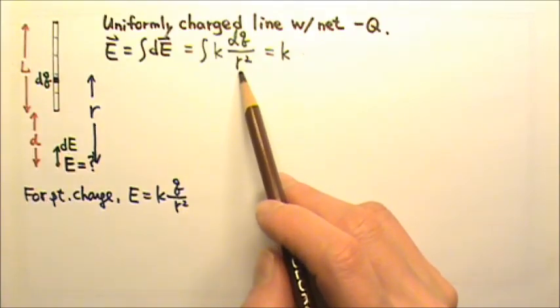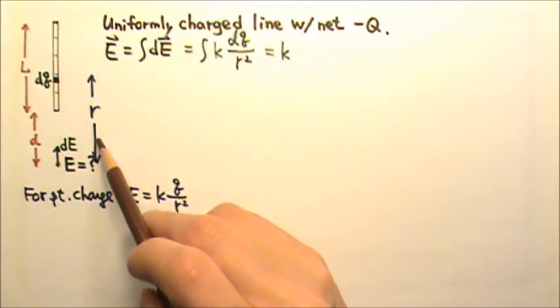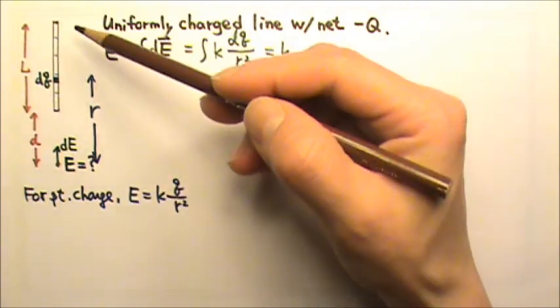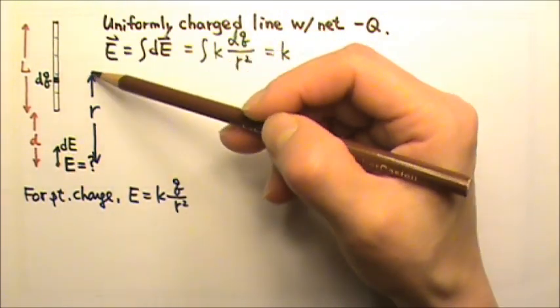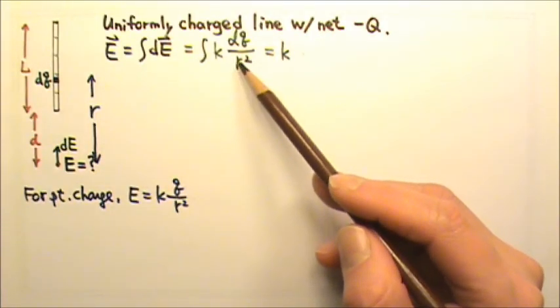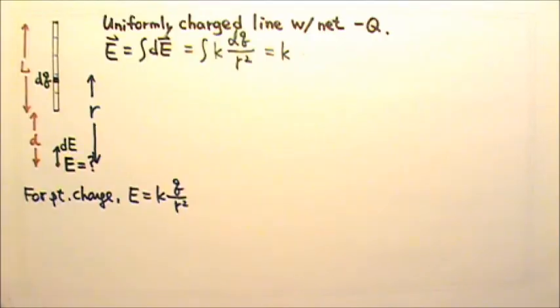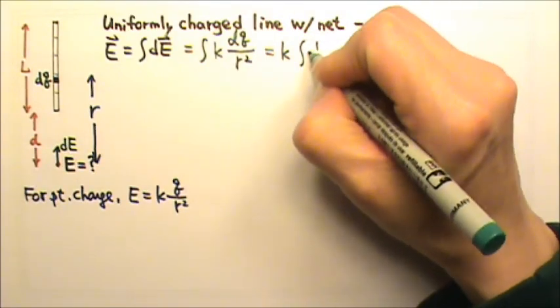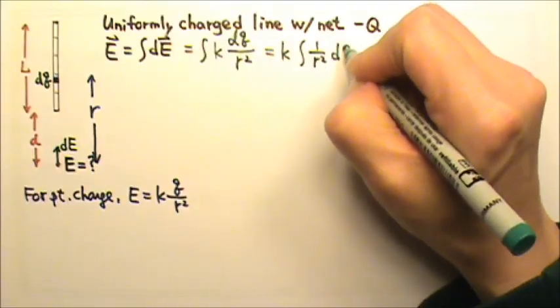Can we take out the R? Is R the same for a different dQ? For a different dQ, R is different. So R is a variable. That means we cannot take R out of the integral. So our integral is going to be 1 over R squared dQ.